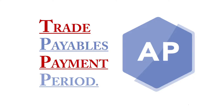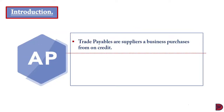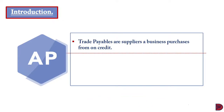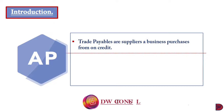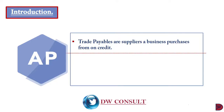Trade payables are suppliers that a business makes purchases from on credit, meaning payment is deferred. These purchases are directly related to the core activity of a business — for example, a business manufacturing pineapple juice would consider the pineapple and conversion materials as purchases. Other items bought on credit but not directly related to core activities are payables, but not trade payables.